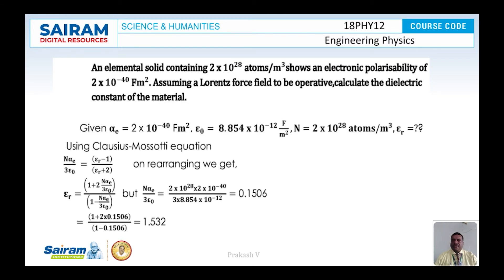The next problem is: an elemental solid containing 2×10²⁸ atoms per meter cube shows an electronic polarizability of 2×10⁻⁴⁰ farad meter square. Assuming a Lorentz local field to be operative, calculate the dielectric constant of the material. Here, αₑ = 2×10⁻⁴⁰ farad·m², ε₀ = 8.854×10⁻¹² farad per meter square, and n = 2×10²⁸ atoms per meter cube.